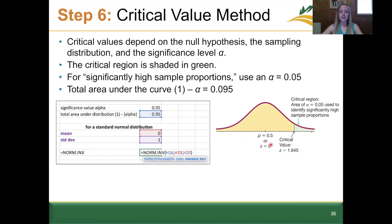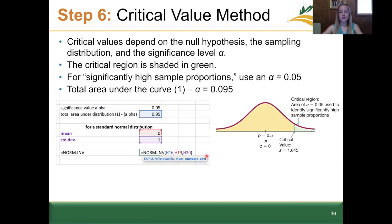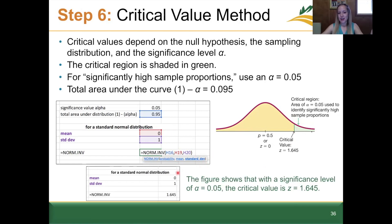When working in z-scores, we can assume a standard normal distribution with a mean of 0 and a standard deviation of 1. To find the corresponding z-score, we use the normal inverse function in Excel. For the normal inverse function, we plug in our probability or area value, our mean, and our standard deviation — and it gives us the z-score separating the cumulative area from the left. Clicking enter, I get a value of 1.645.